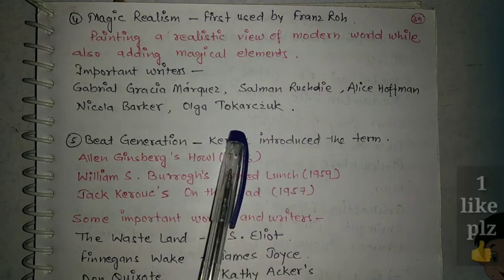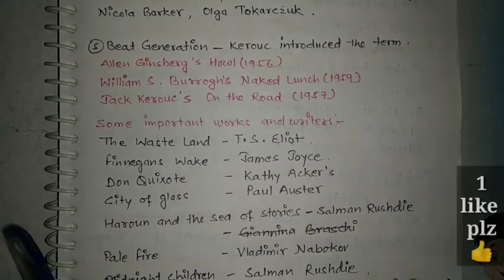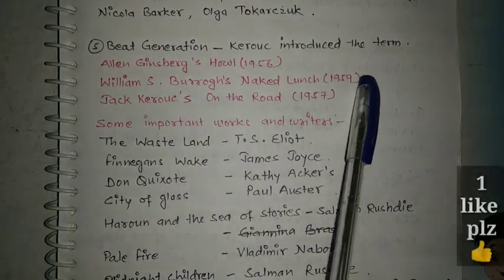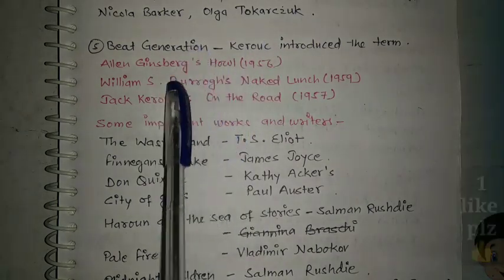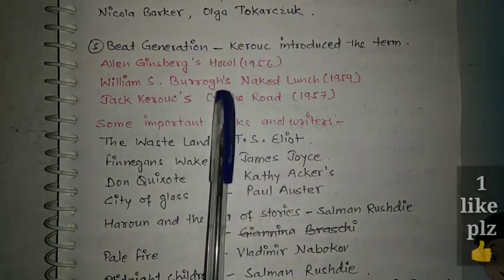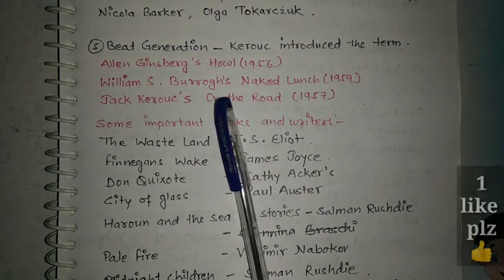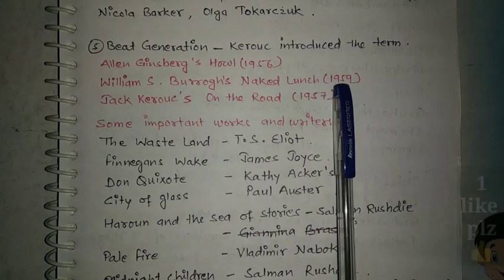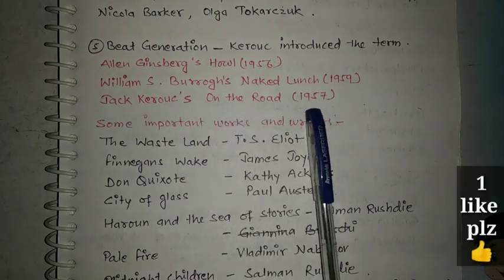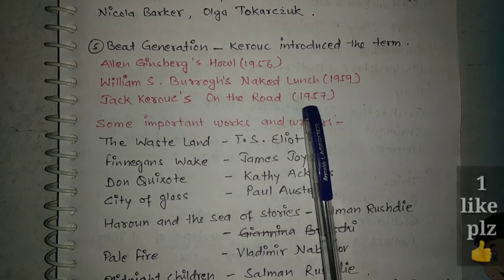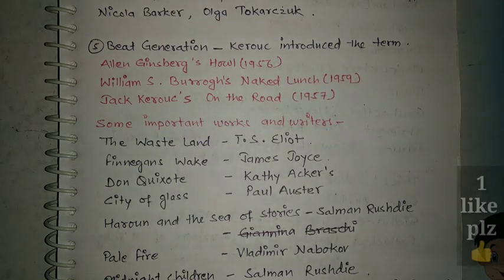The Beat Generation — the term was introduced by Kerouac. Key works and writers include Allen Ginsberg's Howl, William S. Burroughs' Naked Lunch in 1959, and Jack Kerouac's On the Road in 1957.